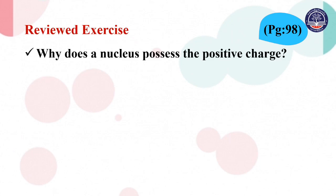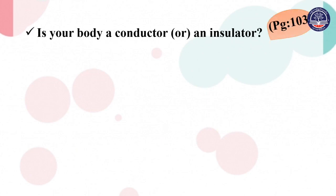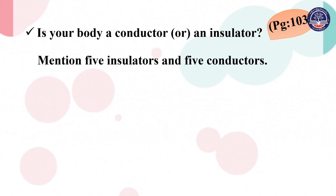Review questions: Why does a nucleus possess a positive charge? What do you understand by a bound electron and a free electron? Why is a normal atom electrically neutral? Give an example of a conductor and an insulator. Mention 5 insulators and 5 conductors.